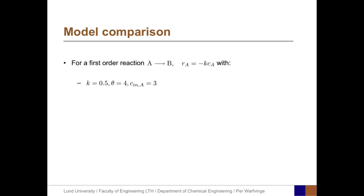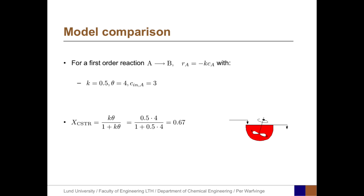Let's take an illustrative example. Consider a first order reaction, A is converted to B, with the rate equation Ra equals minus K times Ca. With the data K equals 0.5, theta equals 4, and the input concentration to the reactor is 3. For the CSTR, we get a conversion of K*theta divided by 1 plus K*theta, which with numbers gives 0.67, meaning 67% of input reactant A is converted.